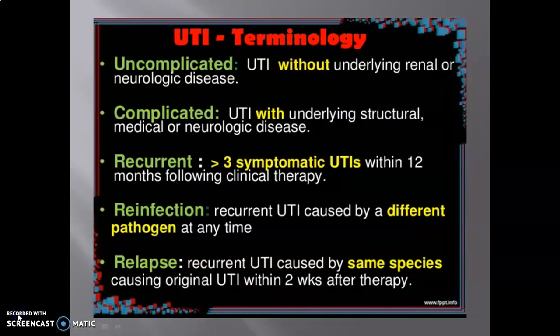In the next slide, we learn about UTI terminology. Number one is uncomplicated — UTI without underlying renal or neurological disease. Next is complicated — UTI with underlying renal or neurological disease.